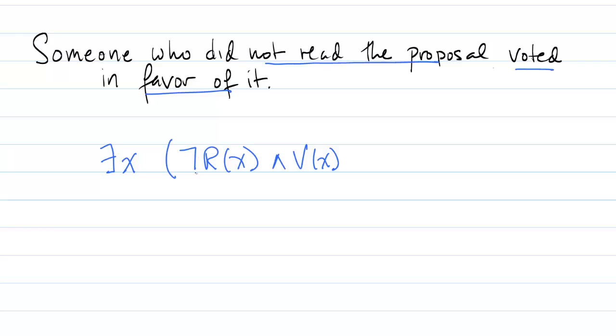And again we're going to use the parentheses so that this existential quantifier is bounding both appearances of these variables. So read more literally from the logical expression it's saying there is a person who did not read the proposal and who voted in favor of it.